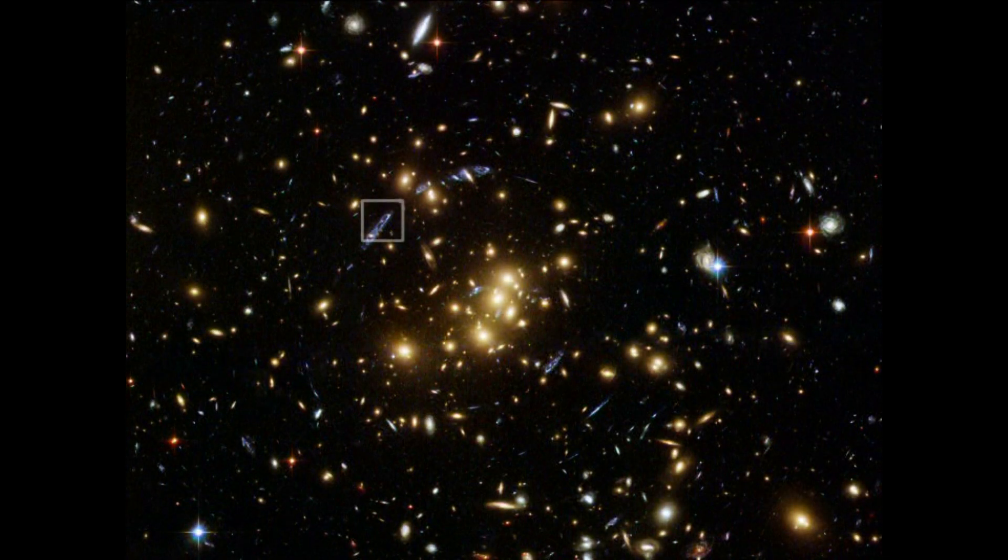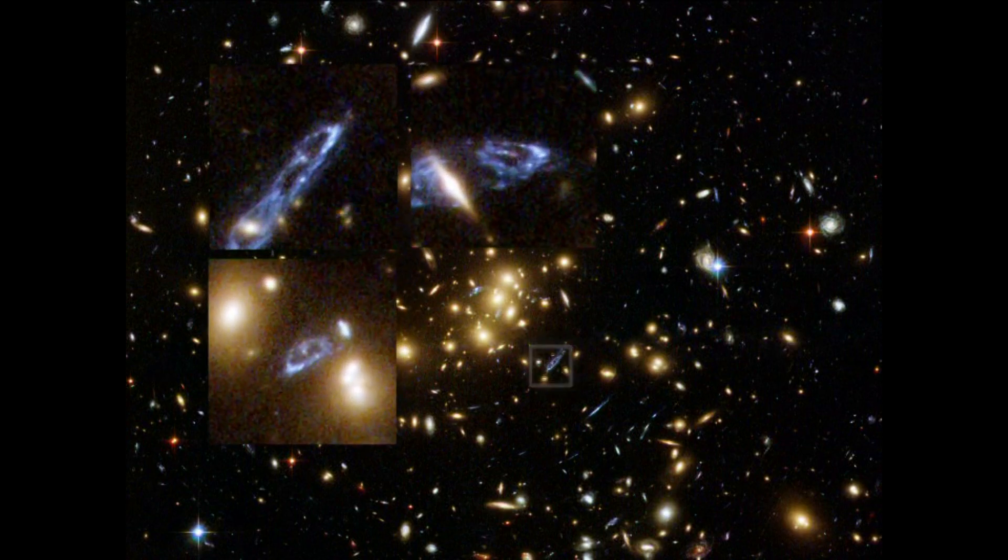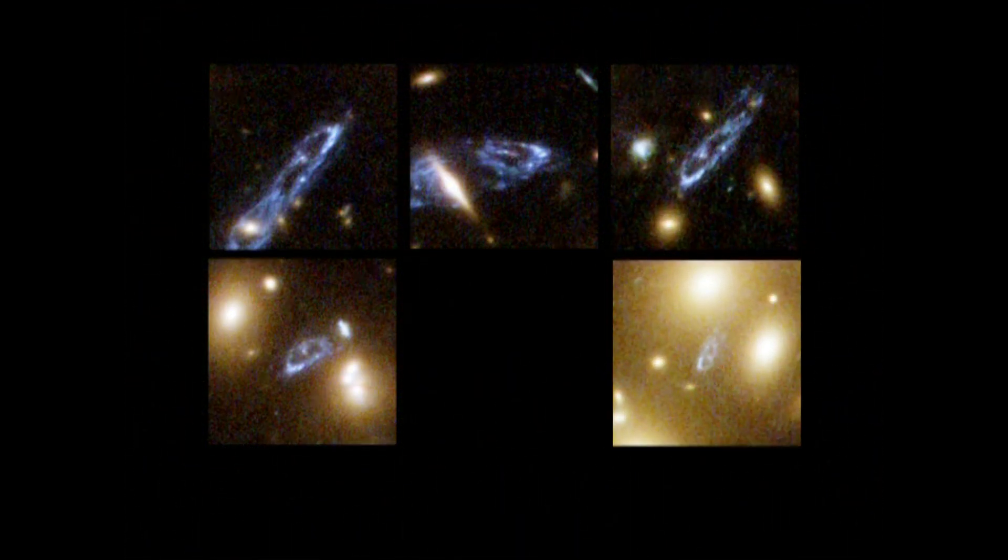One of them, located about two times further away than the yellow cluster galaxies in the foreground, has been multiply imaged into five separate arc-shaped components. Hubble's high resolution can even show the details within this background galaxy.